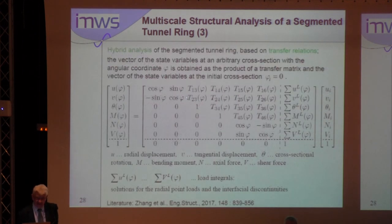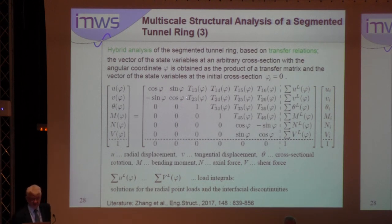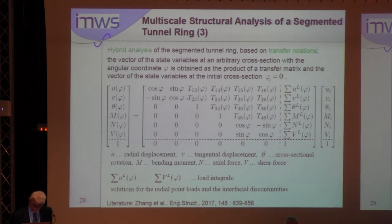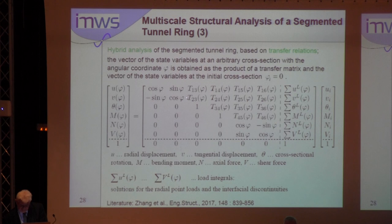Hybrid structural analysis of the segmented tunnel ring was based on transfer relations. The vector of state variables at an arbitrary cross-section with angular coordinate φ is obtained as the product of a transfer matrix and the vector of state variables at the initial cross-section φ_i = 0. Here u is the radial displacement, v the tangential displacement, θ the cross-sectional rotation, m the bending moment, n the axial force, and v the shear force. The seventh column in the matrix contains sums representing load integrals, starting with u_L(φ), v_L(φ), and so on up to V_L(φ) for shear forces.